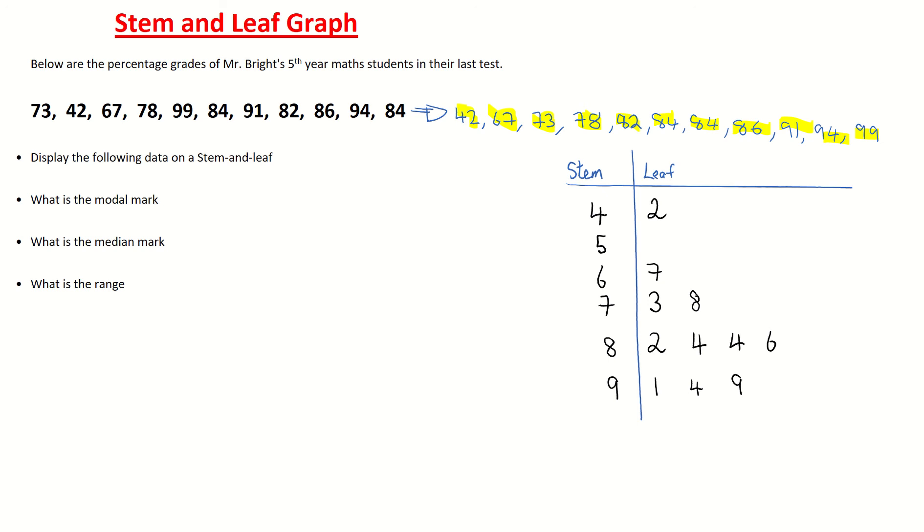The final thing we have to do now in order to get full marks for our stem and leaf is put something in which is known as a key. Now you can put the key anywhere on your stem and leaf, usually down the bottom right hand corner of it. So I'm just going to write in key. And what you do is, the key tells the person looking at your stem and leaf what it stands for.